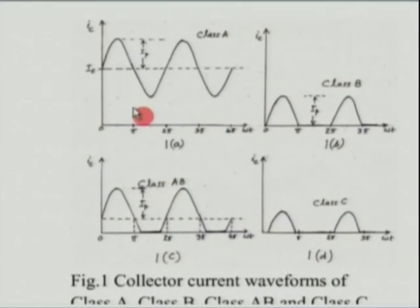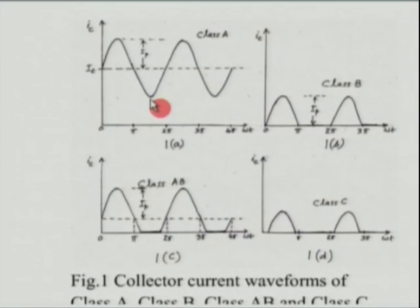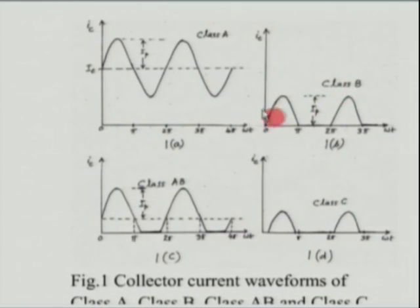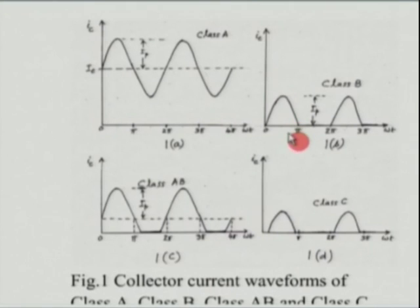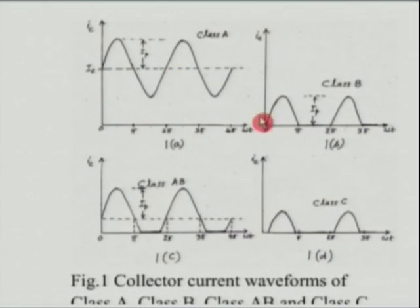In a Class A amplifier, you ensure that even for the largest swing of the signal, the device always has current — the current does not go below zero. That is Class A. When you come to Class B, you use two devices: one device for one half cycle and the other device for the other half cycle. In the Class A case, current was flowing throughout — the conduction angle was 360 degrees. In Class B, the conduction angle is 180 degrees.